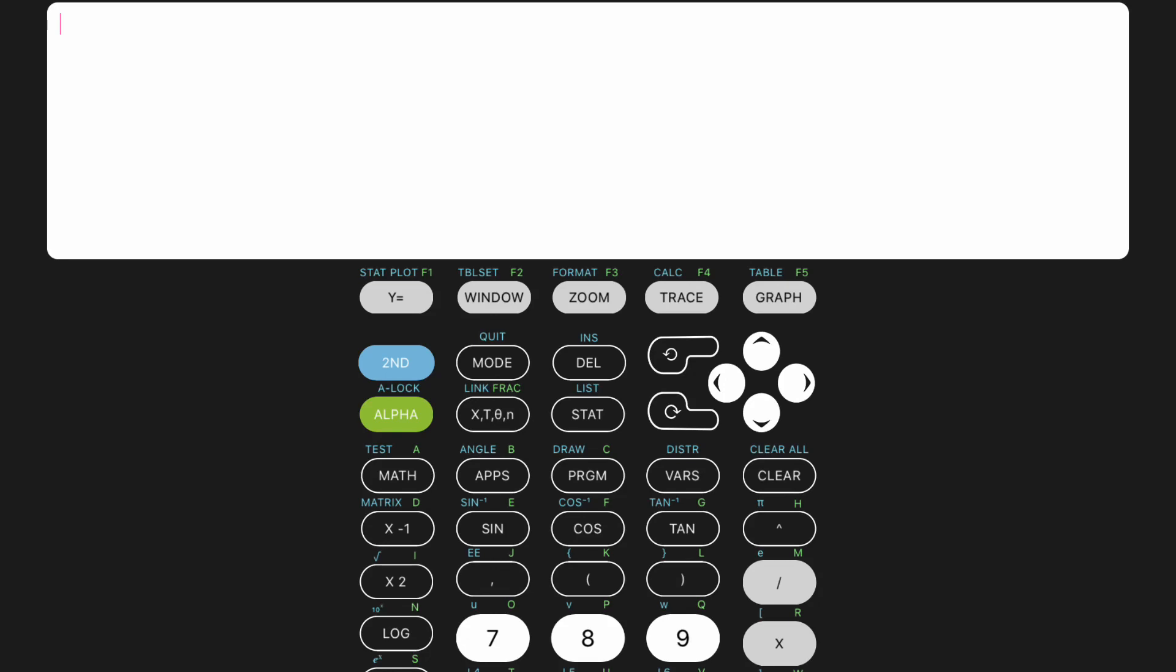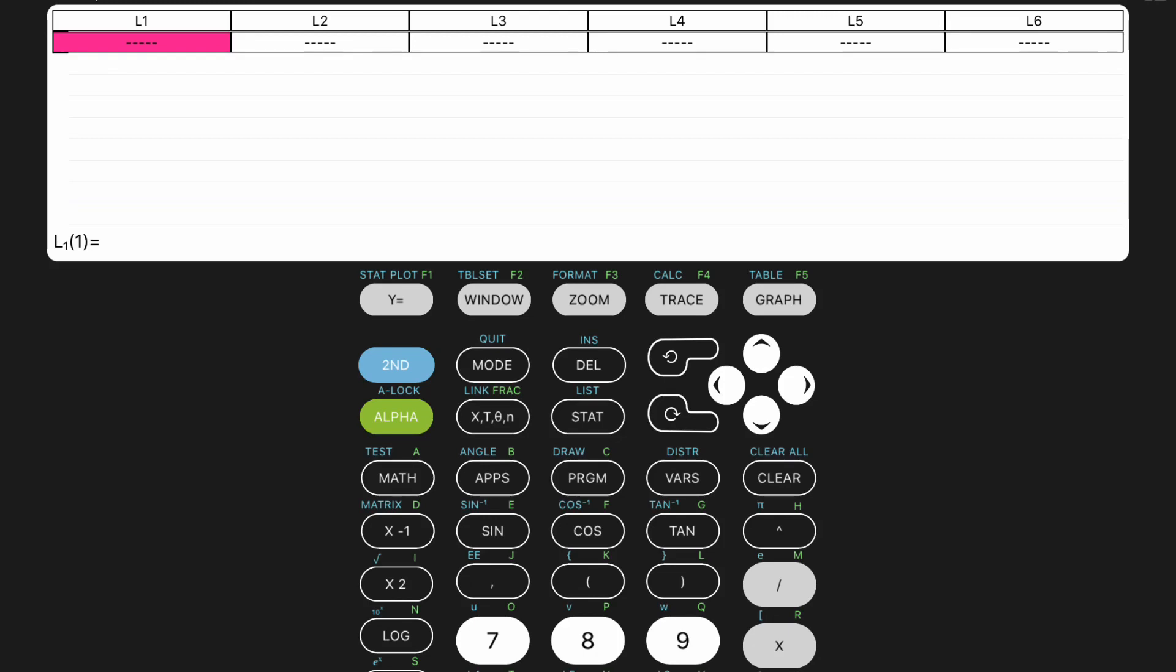On your calculator, you will want to click Stat. From there, you are brought to a menu and the word Edit should already be highlighted. Go ahead and click Enter to edit your data list. In List 1, you are going to enter your X values, which in our case here is just 0-11.